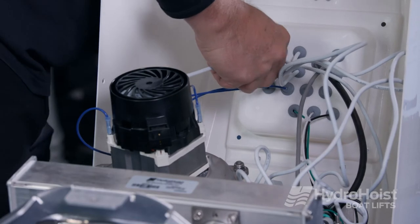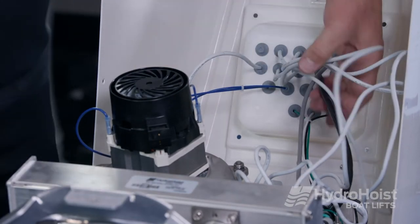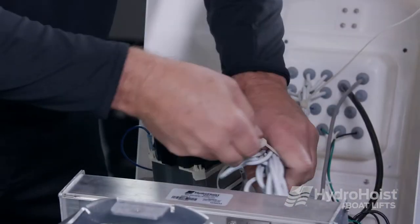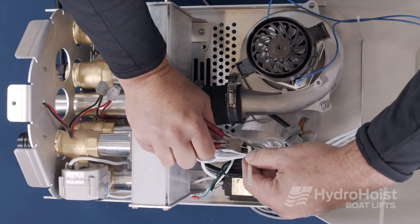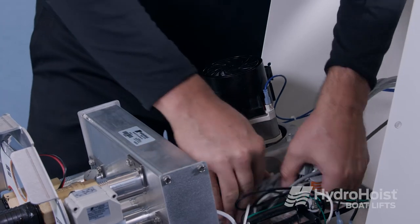Reroute the valve cable through the housing and feed it back through the watertight gland. Coil the valve wires back into a bundle and use zip ties to secure. Trim the excess wire ties with a pair of wire cutters. Then tuck the bundle behind the air manifold assembly out of the way.